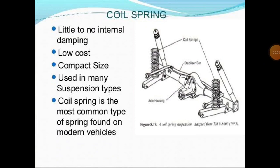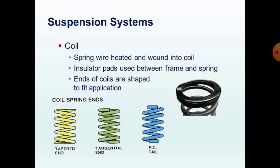Hello friends, welcome. In the last lecture we studied leaf springs and types of leaf spring. Then we started our lecture with the coil spring, the second type of spring. Coil springs are used in suspension systems. They have little to no internal damping, low cost, compact size, and are used in many suspension types. The coil spring is the most common type of spring found on modern vehicles.